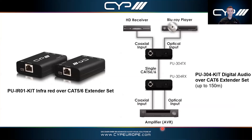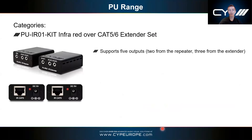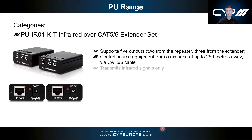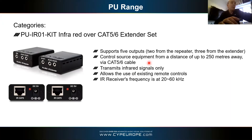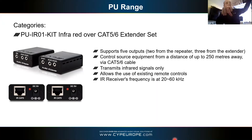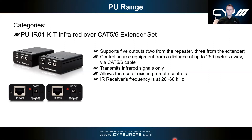If your system requires IR extension, we have a PU product for sending IR signals up to 250 meters over CAT. The transmitter and receiver each have an array of IR inputs and outputs. The input on the repeater section outputs simultaneously to all five outputs, so you can control local devices near the transmitter and two or three remote devices at the same time — very useful.